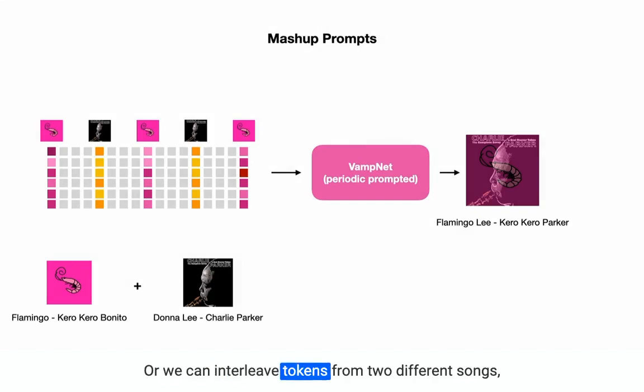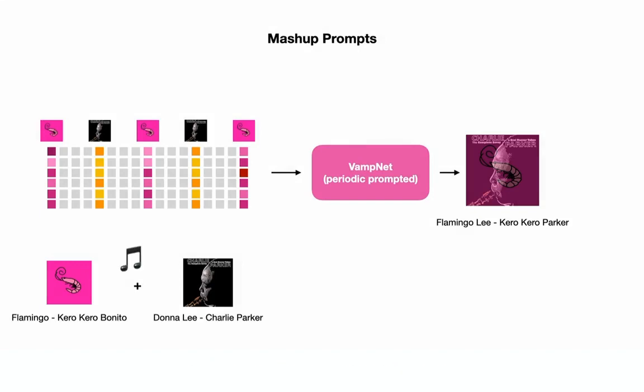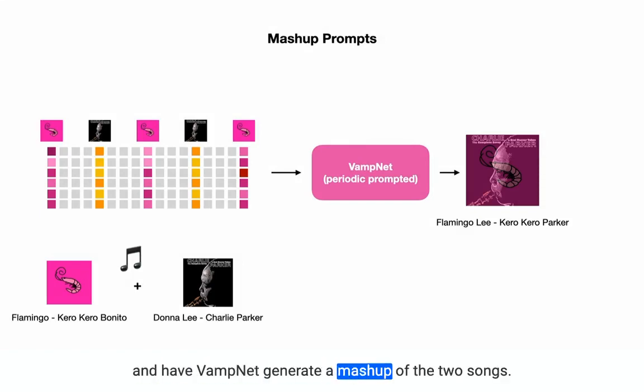Or we can interleave tokens from two different songs and have VampNet generate a mashup of the two songs.